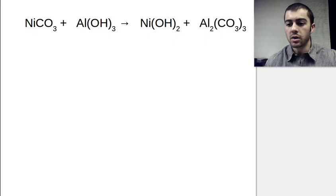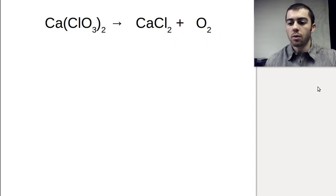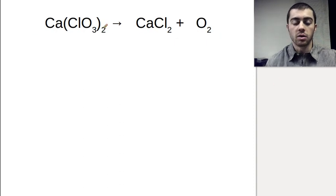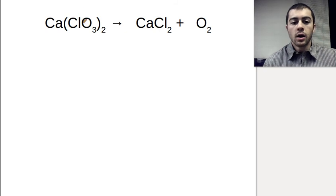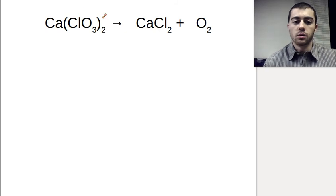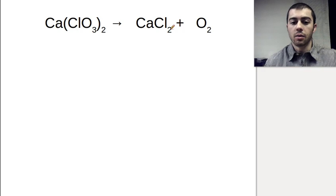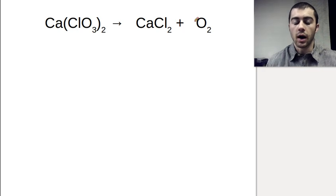If you have a polyatomic ion — like a hydroxide or a carbonate — as long as it appears on both sides, you can treat it as one group. So the next final example is one where a polyatomic doesn't appear on both sides. Here we have chlorate, but it gets split up in this decomposition reaction into its parts: oxygen and chlorine.